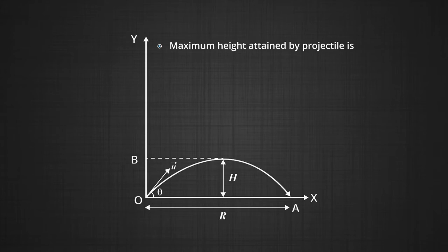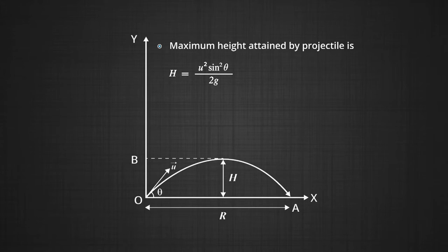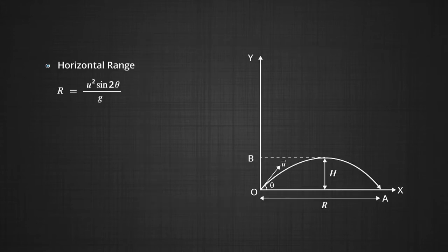OA represents the range of the projectile and OB represents the maximum height of the projectile. The maximum height of the projectile is given by H = U²sin²θ / 2g, where θ is the angle of projection, U is the velocity, and g is the acceleration due to gravity. R is the horizontal range, given by R = U²sin2θ / g, where U is the initial velocity, θ is the angle of projection, and g is the acceleration due to gravity.